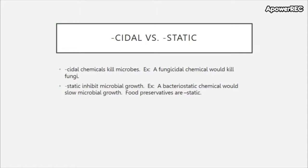Two terms often associated with these processes are sidal versus static. Sidal means to kill — like homicidal or suicidal, there's death involved. Blank-sidal chemicals involve killing microbes; for example, a fungicidal chemical would kill fungi. Static means to inhibit microbial growth, so a bacteriostatic chemical would slow bacterial growth. You often find food preservatives that are static.